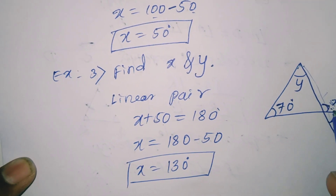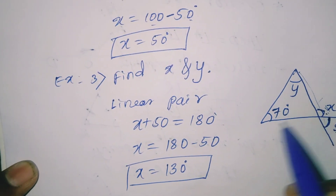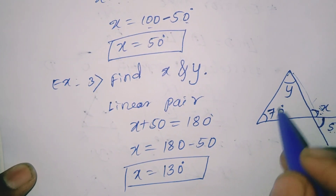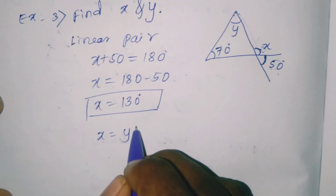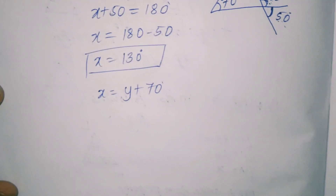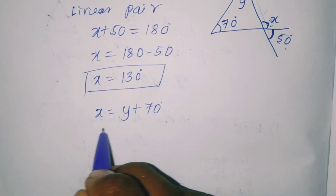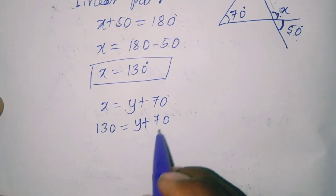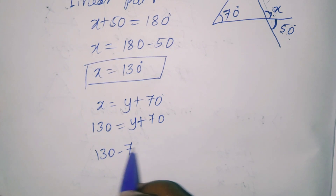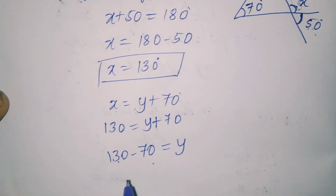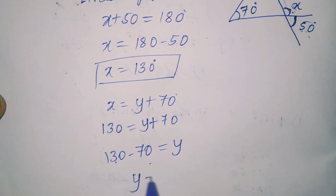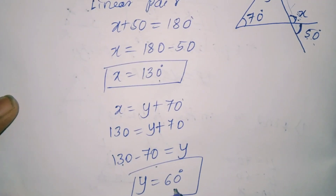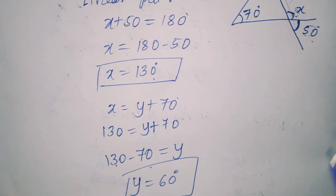Now to find y, we apply the exterior angle property. The exterior angle x equals the sum of the two opposite interior angles y plus 70. Substituting x equals 130: 130 equals y plus 70. Therefore y equals 130 minus 70, which equals 60 degrees. So x is 130 degrees and y is 60 degrees.